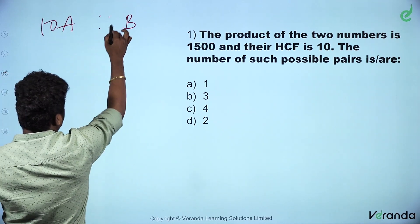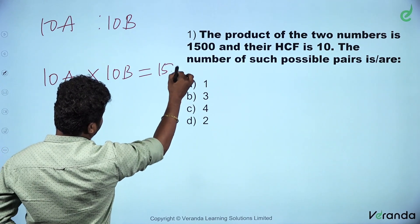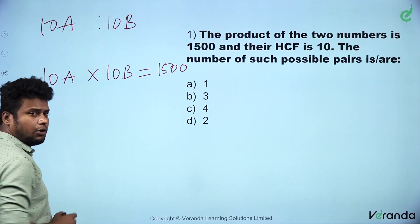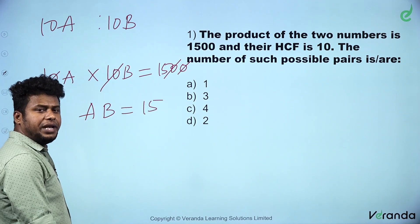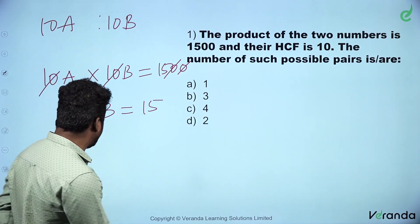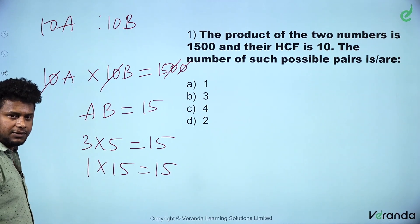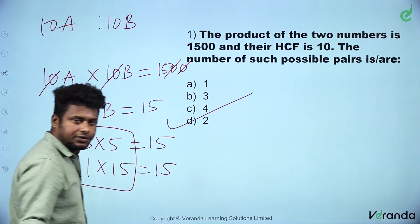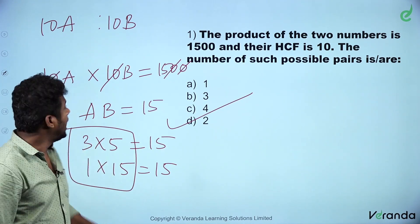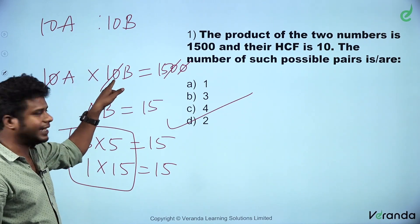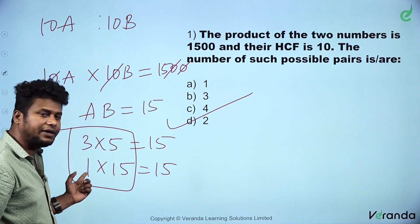So then 10A and 10B. Then 10A into 10B is equal to 1500. Now A into B is equal to 15. How many combinations are there? 1 into 15 is 15, and 3 into 5 is 15. If the possible pairs are 3 into 5, then it can be 1 into 15. Two pairs.